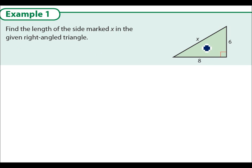So we have sides 6, 8, and x. Now the right angle, the 90-degree angle, is opposite the side x. So x is the hypotenuse. This is always the longest side.